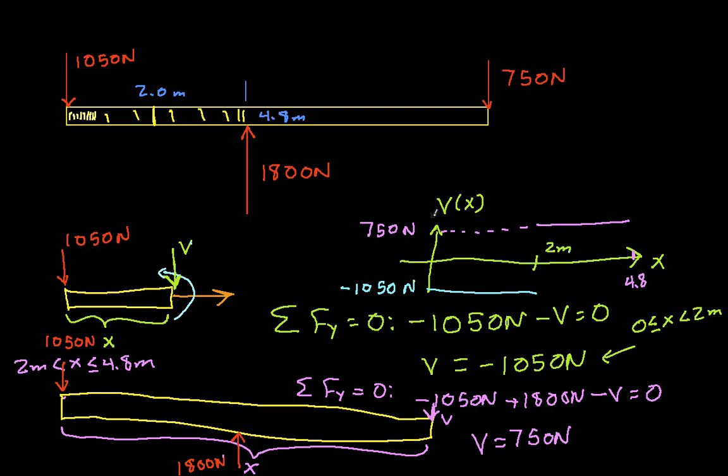cut my beam at essentially every possible location by representing that location where I do the cut as x. And then by thinking about it, figuring out which concentrated forces apply, and then find the value of v given these concentrated forces.